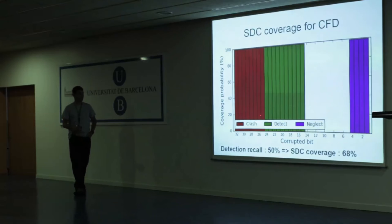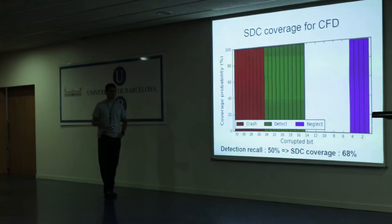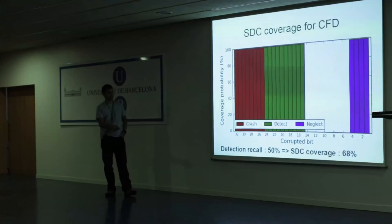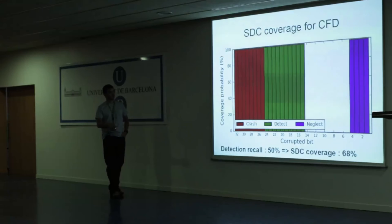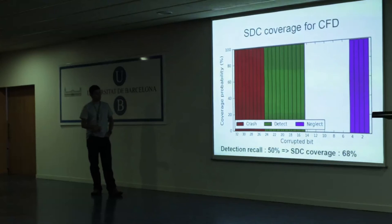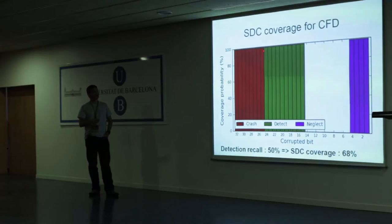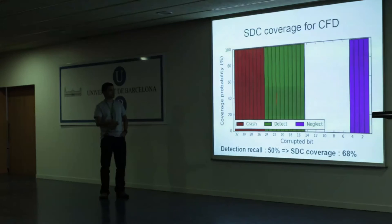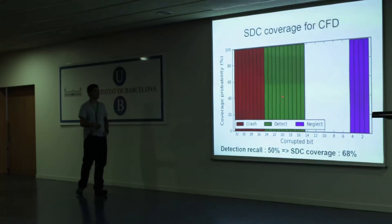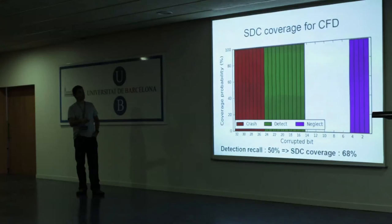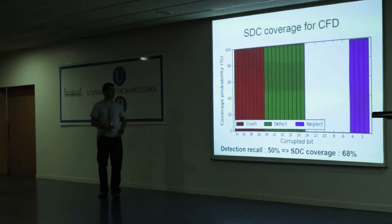We did these experiments with the CFD application, injecting all bit positions. If we inject in bits 25 to 32, the application will crash - it starts producing NaN values and eventually crashes. The lower bits are negligible as the error is less than 10 to the minus 5. The green bars show what we managed to detect for each bit position. From bit position 24 to 15, we get about 99.9% detection recall. For each bar, we injected thousands of bit flips and ran the detectors to see if they could detect. Everything in the green area is detected with 99.9% recall.